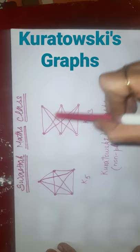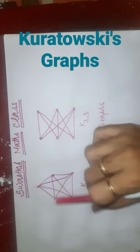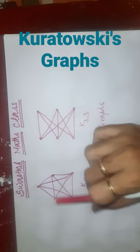Moreover, K5 is a non-planar graph with the smallest number of vertices, and K3,3 is a non-planar graph with the smallest number of edges. These are the specialities of these two graphs.